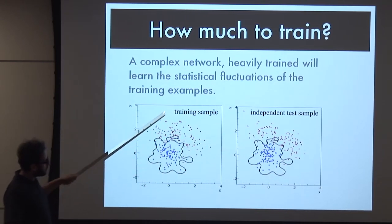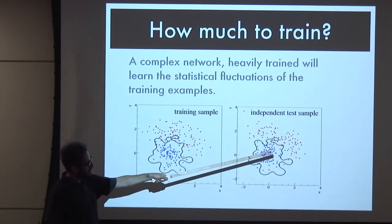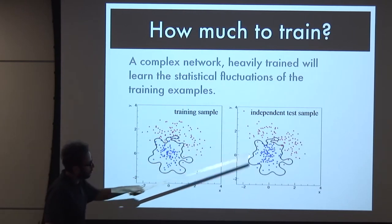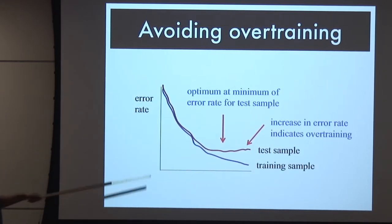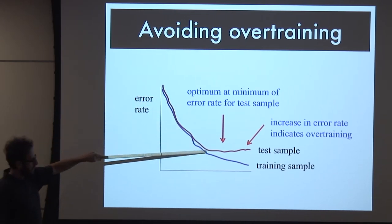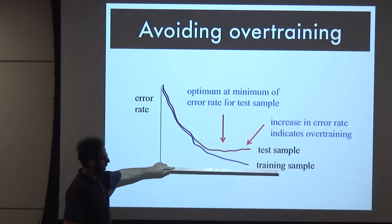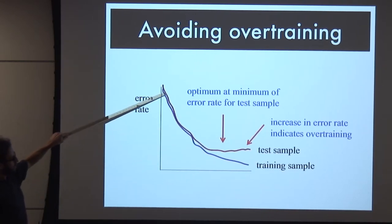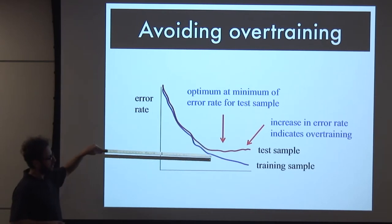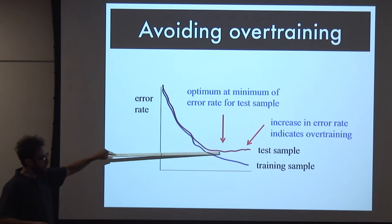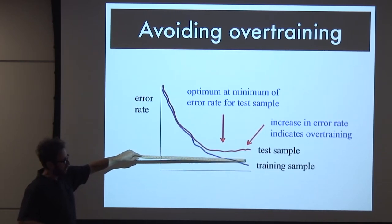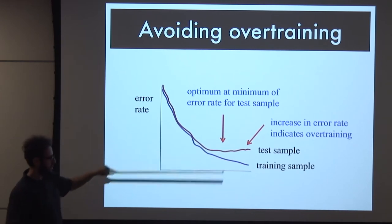So you have a sample on which you're learning and another sample on which you're testing. You only believe the performance on the independent one, because you're not interested in learning the statistical fluctuations of one particular sample generated on a Tuesday - you want this to perform well in general. You keep doing the updating and evaluate the error rate on your training sample, which by construction will continue to decrease, and you also monitor performance on the test sample, which is independent. At some point the test error stops dropping.